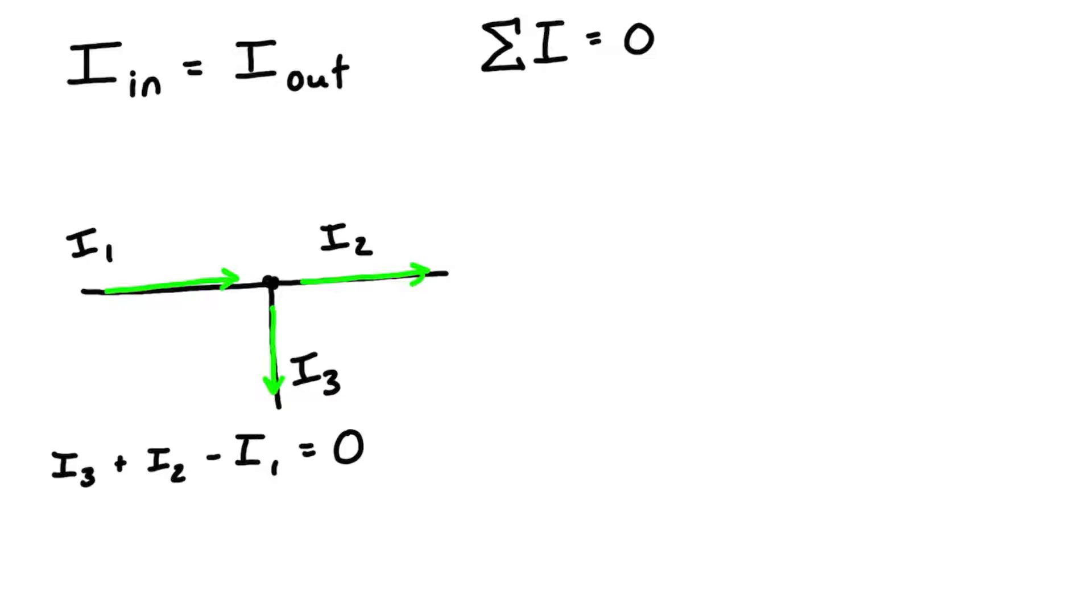We could rearrange this as well. We could bring i1 to the other side and have i3 + i2 = i1—that would be the currents flowing out equal to the currents flowing in. Or we can write it with them all on one side, picking the direction of positive being outwards and negative being inwards.